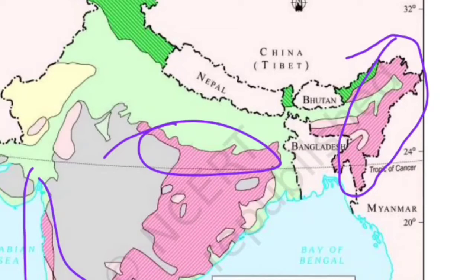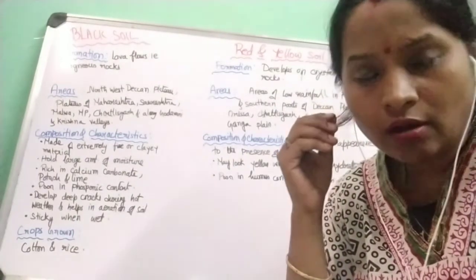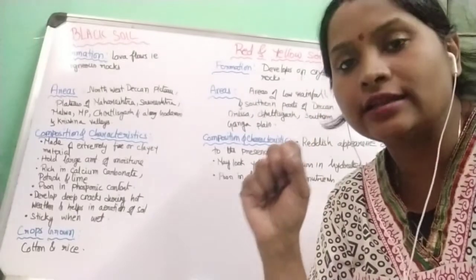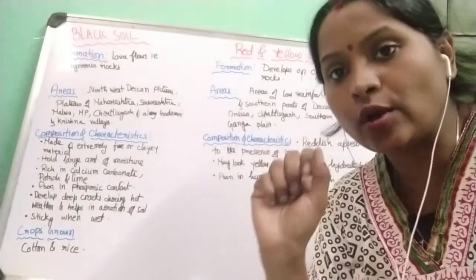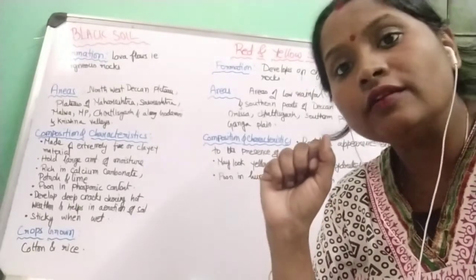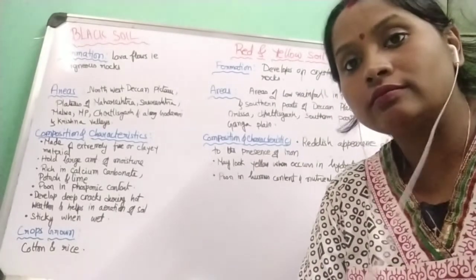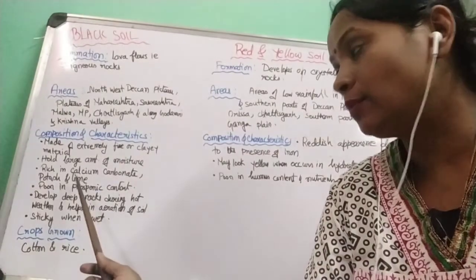Now we will shift back to our discussion of the formation, composition, characteristics, and crops for each soil type. We've looked at the map showing where each soil is found; now let's look at the details of black soil and red and yellow soil.